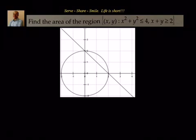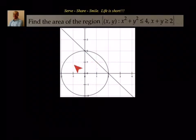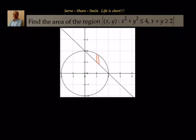We need to find the common area satisfying both conditions: x² + y² ≤ 4, meaning all points inside the circle, and x + y ≥ 2, meaning all points to the right side of the line. Both conditions are satisfied by only this particular region. To find it, we take a vertical strip and find the area between these two curves.